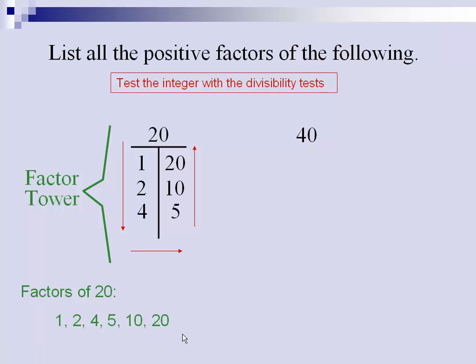For the number 40, we would start with 1, and 40 divided by 1 is 40. And then 2, 2 divided by 40 would give me 20. 3, does 3 divide by 40? According to the divisibility test, no it does not, so we would skip to 4. 4 does, and divided by 40 makes 10.